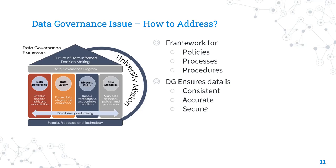The next important aspect of data governance is data access — who is going to access the data and how it will be managed. Data access refers to the ability to access and use data within the organization. It is necessary to establish clear data access policies and procedures to ensure that data is accessed only by authorized individuals and departments. These policies should also include measures to prevent unauthorized access, such as access controls and user authentication.